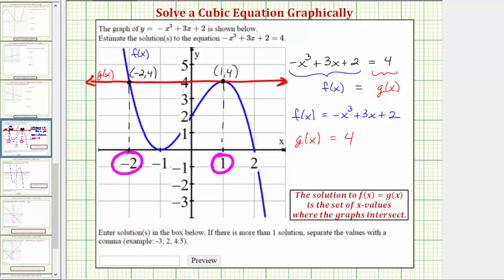So looking at the bottom of the page, we're asked to enter the solutions in the box below. If there is more than one solution, separate the values with a comma. So because our solutions are x equals negative two and x equals one, we enter negative two comma one. I hope you found this helpful.